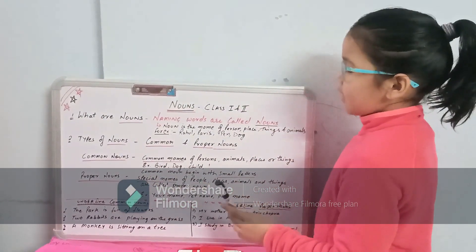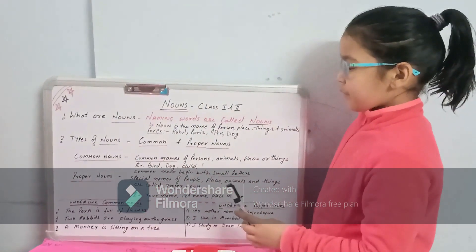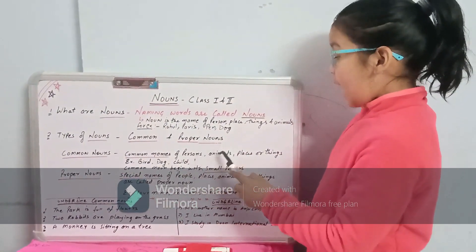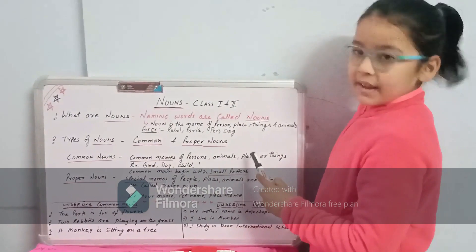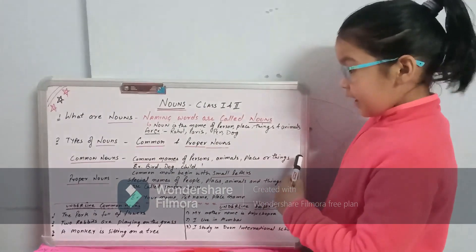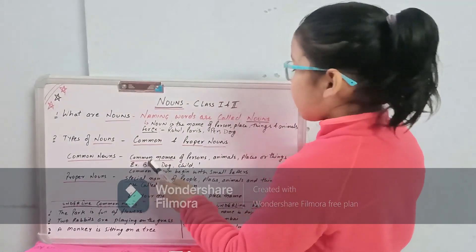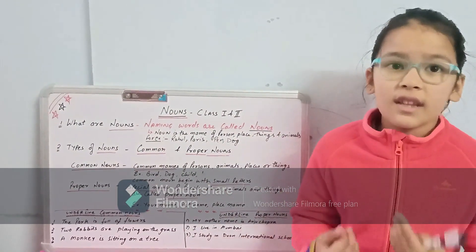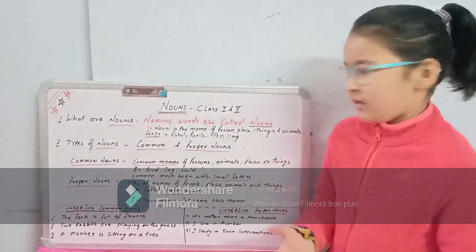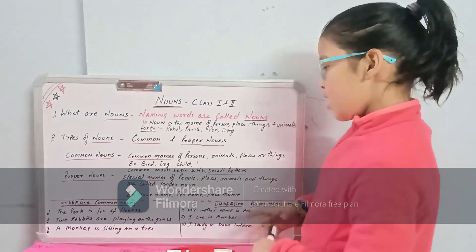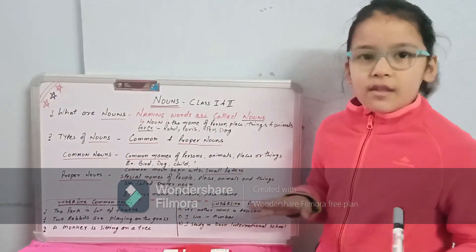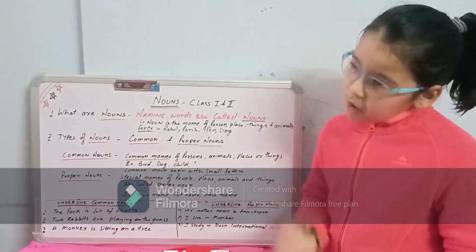Let us discuss about common nouns. Common nouns are common names of persons, animals, places, or things. For example: bird, dog, child. We don't know their specific name, so they are called common nouns. Common nouns always begin with small letters.